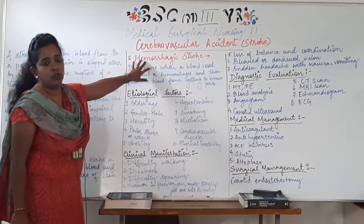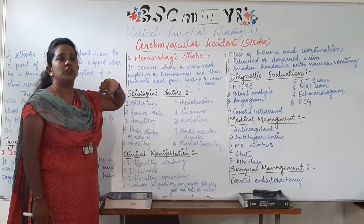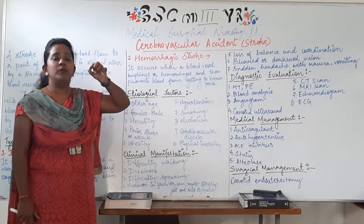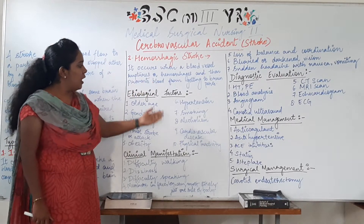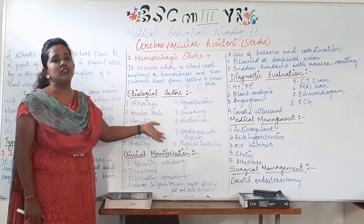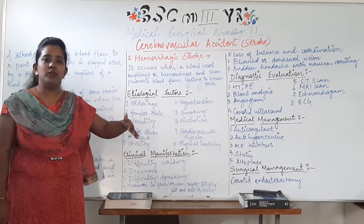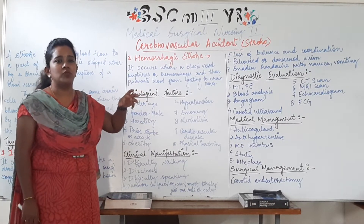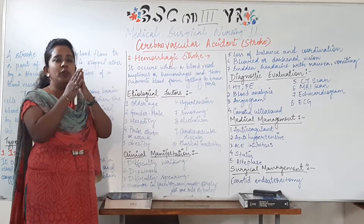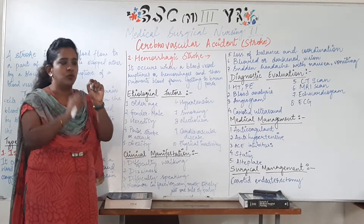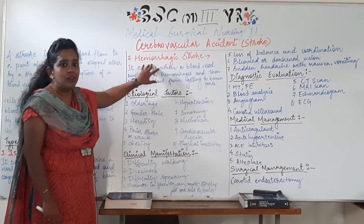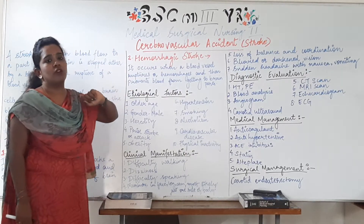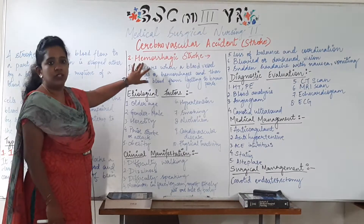The second type is Hemorrhagic Stroke, which happens when there is a problem in an artery and the artery ruptures. Due to etiological factors like hypertension, pressure increases in the lumen. If the lumen wall ruptures in any area, bleeding starts and blood cannot reach further beyond that point. That type of stroke is known as Hemorrhagic Stroke.